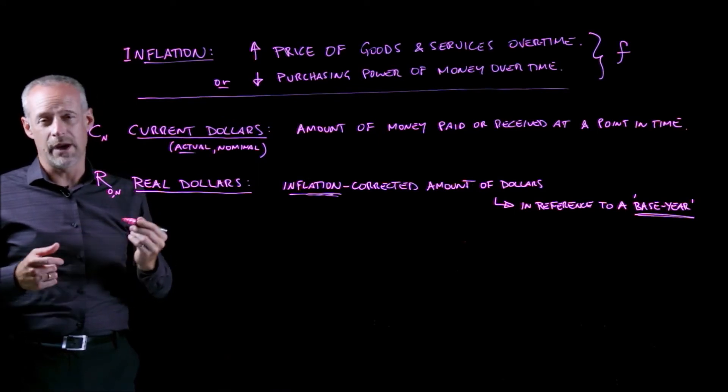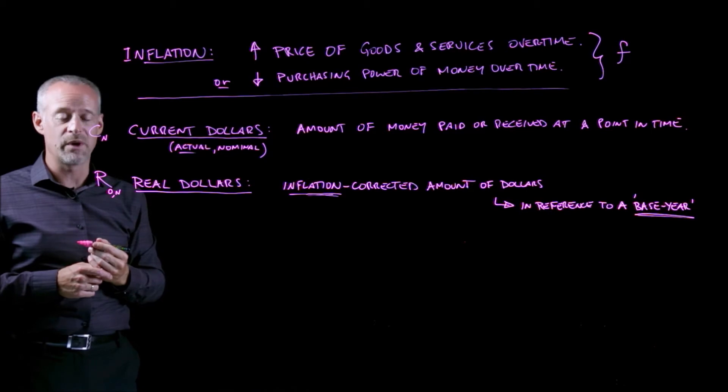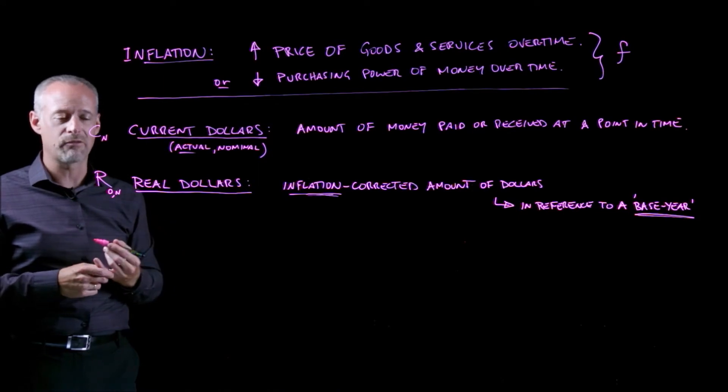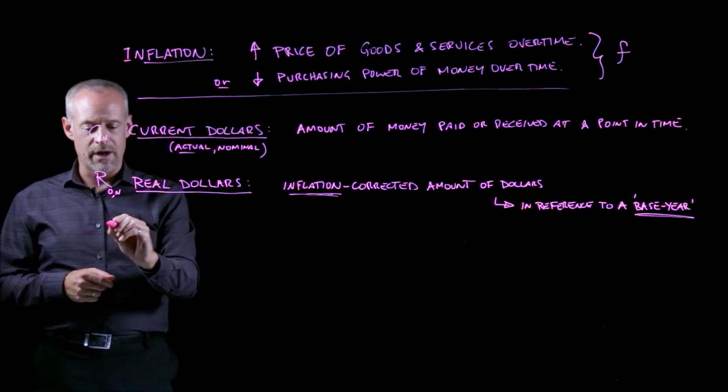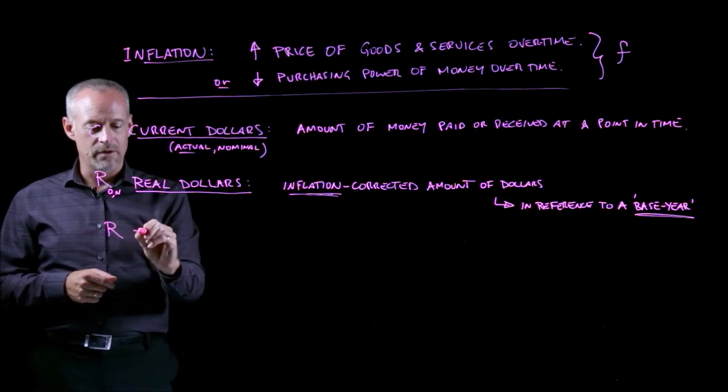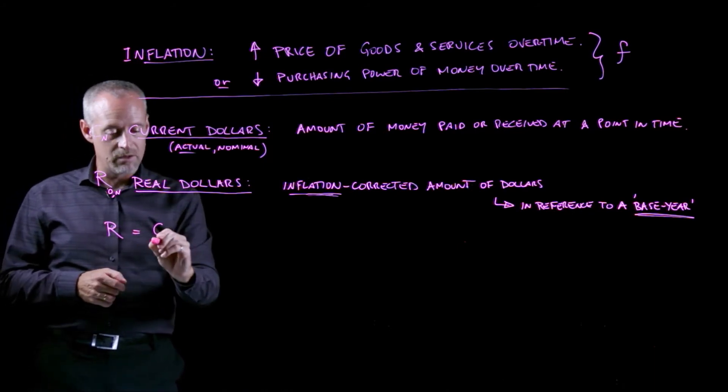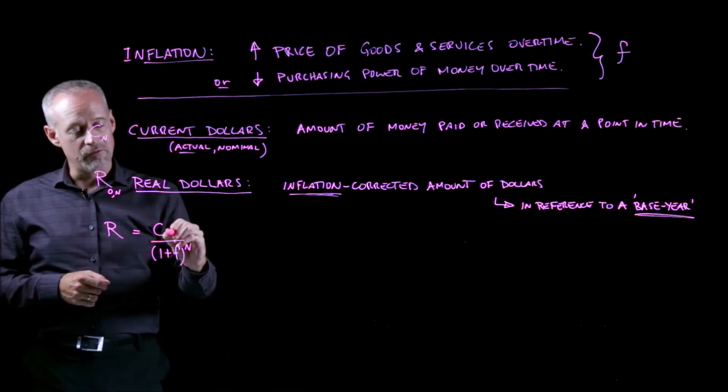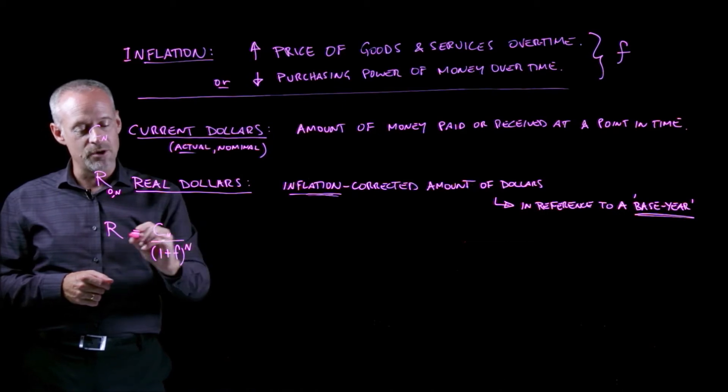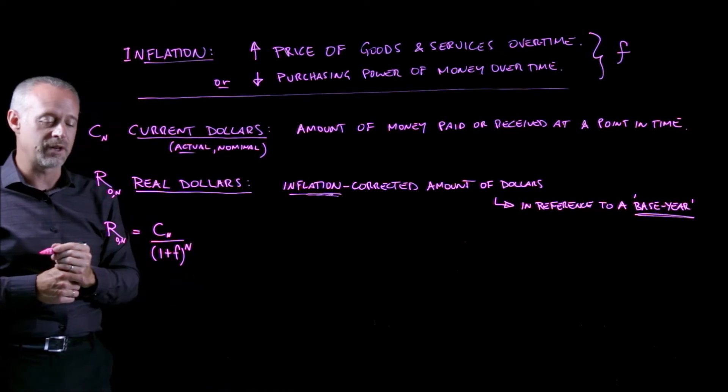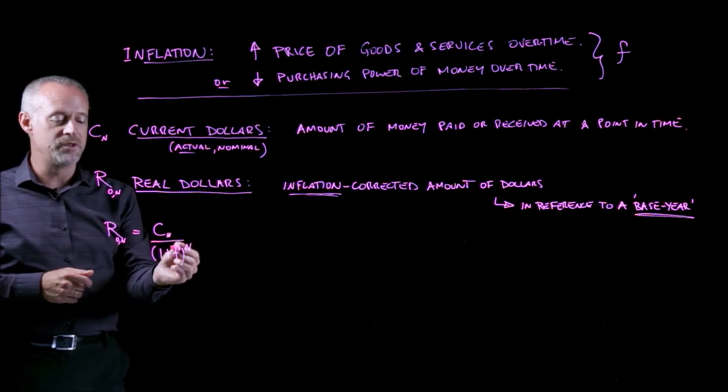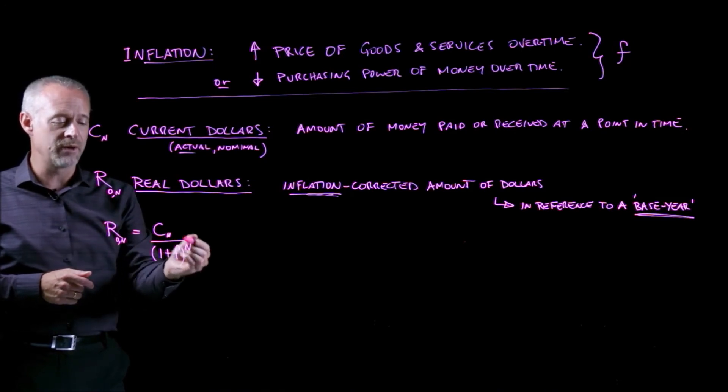And the way that we relate current dollars and real dollars is actually using a technique that we've already learned. It's basically the time value of money. Instead of using I for an interest rate, we simply use F as a correction. And the way it often looks is I can write the value of R equal to the value of C divided by 1 plus F to the n, where the value of current dollars in n years away from the base year for where we're interested in calculating the real dollars is also the exponent in this equation. So you can see we're really just discounting the current dollars by the amount of the inflation and compounding it by the number of years.